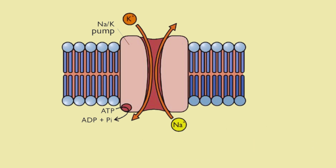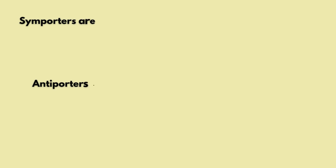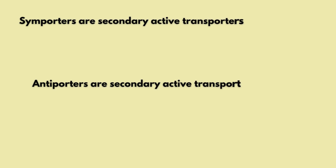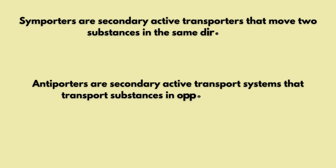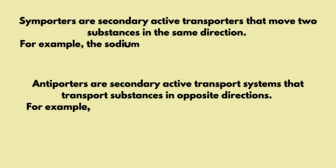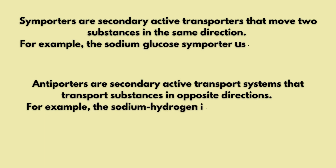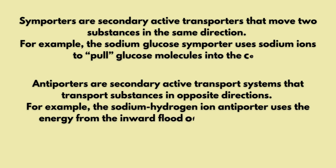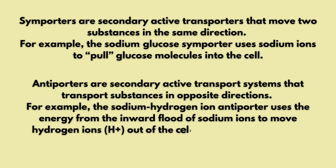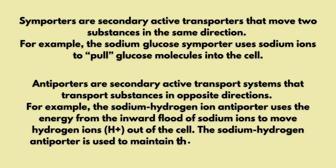Next is symporters. Symporters are secondary active transporters in which two substances are passed in the same direction. For example, sodium-glucose symporters: sodium ions entering the cell also pull glucose molecules into the cell. Glucose is needed as an energy store, and sodium is used to pull glucose, which is in higher concentration.